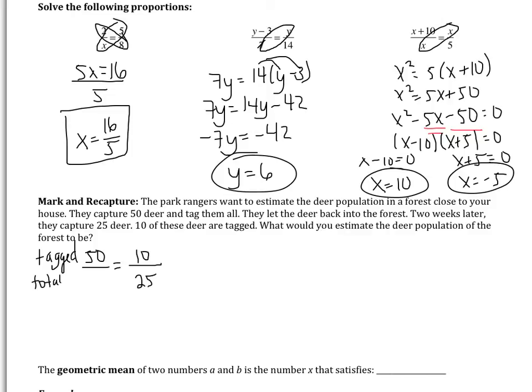And then this is where our population would be. So now I need to solve using the cross products property. I get 10x equals 1250. If I divide by 10, I get x equals 125. So the park rangers would estimate that the deer population is about 125 deer.